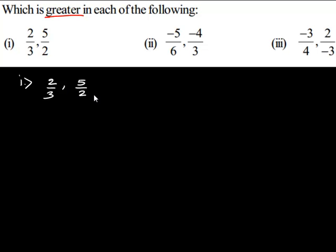Before we compare the rational numbers we should express each of the following rational numbers with a positive denominator. So here we have 3 and 2 as denominators which are positive.